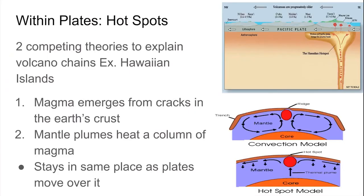Within plates, there is controversy among geologists as to why volcanoes form. There are two competing theories. The first, in line with the convection model of plate tectonics, says cracks in the crust within plates allow magma to come up and create volcanic chain islands. Another theory says plumes of extremely hot material emerge from the outer core and rise all the way up to the crust, heating a local spot and causing magma to melt there. As the plates move above that hot spot, this creates a volcanic island chain, as we see in the Hawaiian Islands.